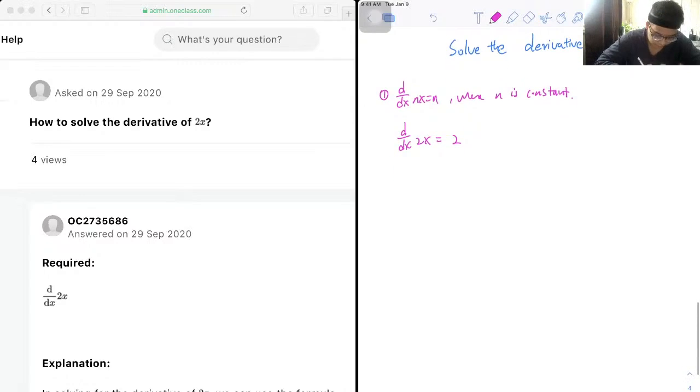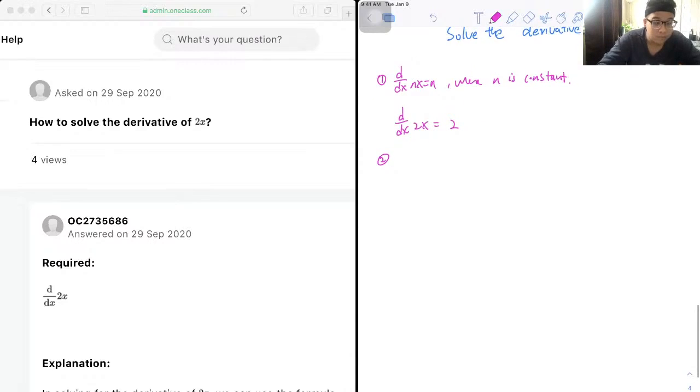And if you want to solve this by the limit definition, let's first copy down the formula. So derivative of f(x) is equal to limit as h approaches 0 of f(x+h) minus f(x) over h.